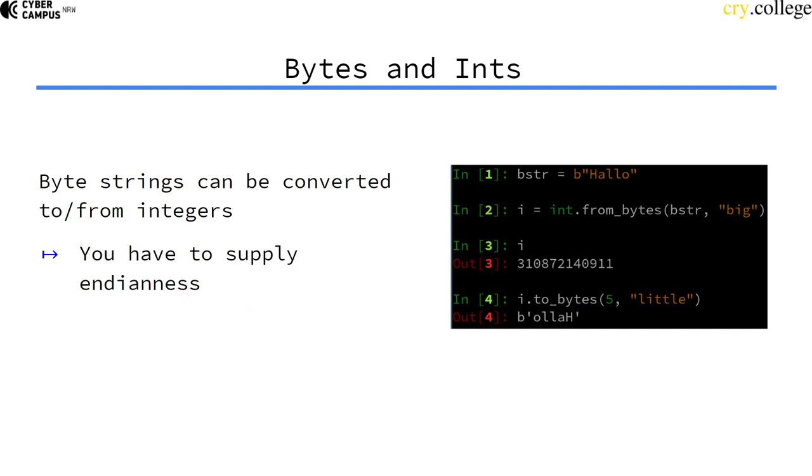One thing we'll be using a lot is converting bytes to integers and converting integers to bytes. Python has a nice helper function for this. We can create a byte string here, prefixed with a B, and then say int.from_bytes, then supply the byte string. We also have to supply the byte order—it's either little endian or big endian. So now we have an integer. The bytes in ASCII 'hello' interpreted as a big endian integer form this number.